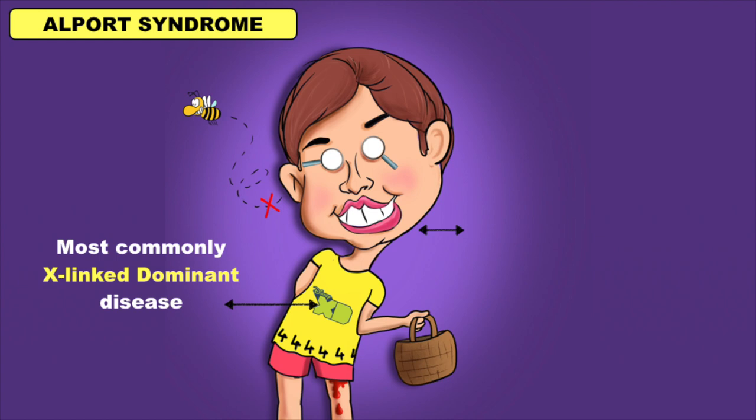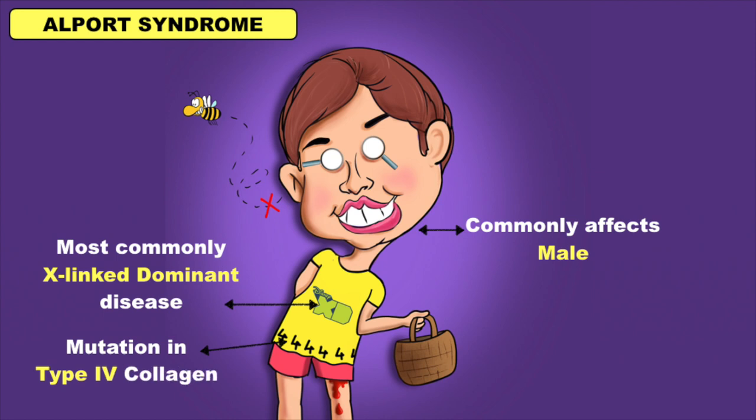The character drawn is a boy, which will help you to remember that it commonly affects males, especially in the age group of 5 to 20 years. The number 4 written on his t-shirt signifies that the disease is due to mutation in type 4 collagen.